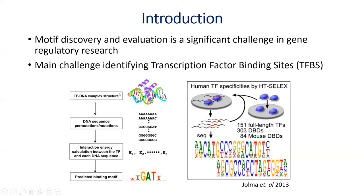The DNA binds to the transcription factor, and we find the region where the transcription factor binds to the DNA. You sequence that region, and from the sequenced region you can do an alignment. The alignment is used to calculate the binding energy of the transcription factor to the motif. From this, you can predict the binding energy of the transcription factor to the motif. There are different techniques which have been used to perform these studies whereby we select these motifs.